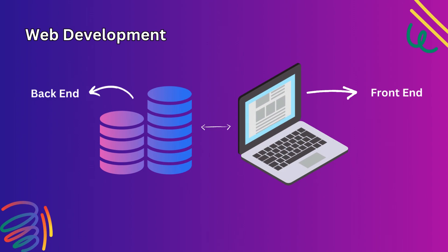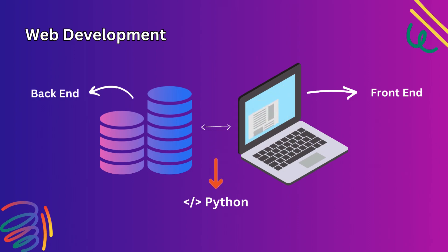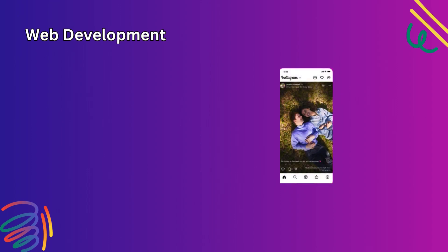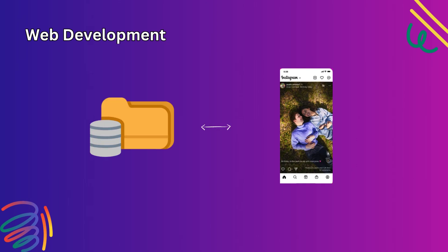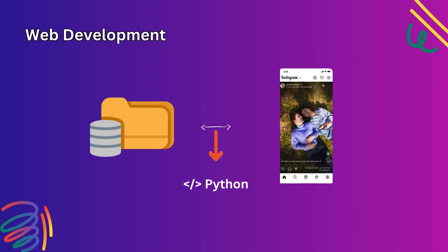In the back-end, the data is actually stored in a database. We need a programming language like Python to send this back-end data to the front-end when a user makes a request. For example, Instagram displays a lot of images and videos from our friends and circle. What we see and interact with on web pages is the front-end. These images and videos we upload are stored in a database, and we need a programming language to pull them up when we use Instagram at the front-end.